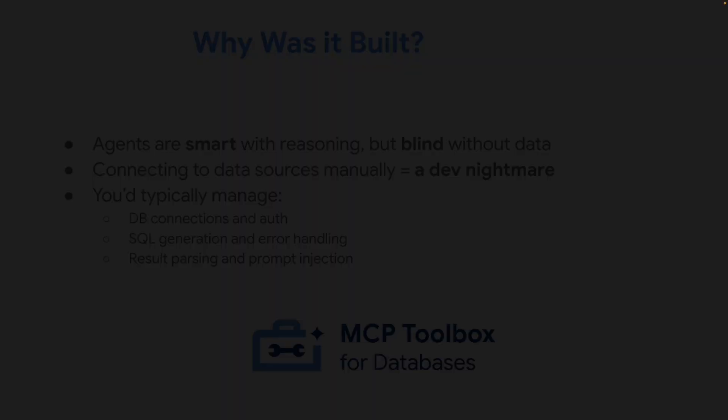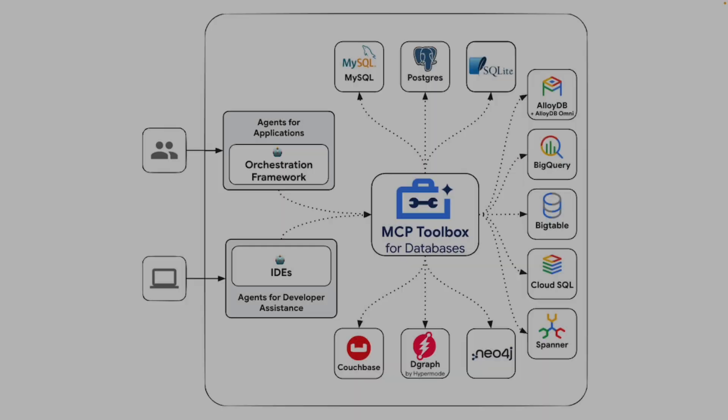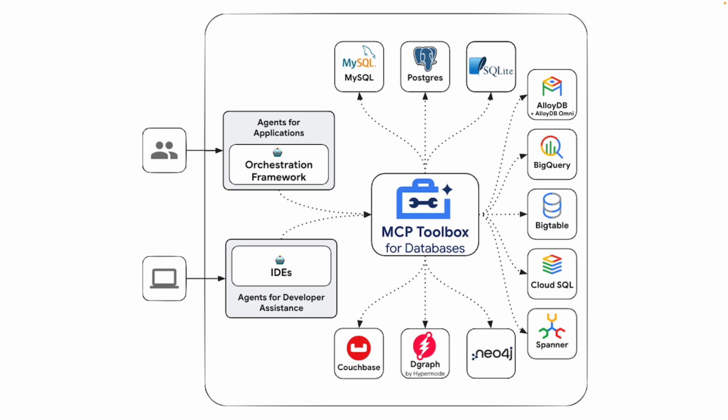MCP Toolbox speeds up the entire AI agent creation process. It manages all the complexities of tool creation and is universally compatible — anyone can deploy their own MCP server for their specific API data or platform. The architecture shows your agent application connecting through the MCP Toolbox server, which in turn connects to SQL, Postgres, AlloyDB, BigQuery, Cloud SQL, or any other database provider.